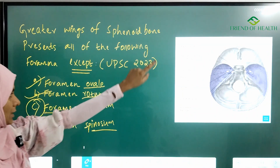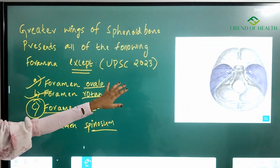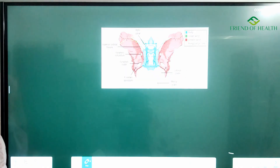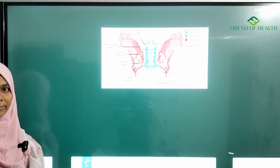To summarize: foramen ovale, foramen rotundum, and foramen spinosum are all part of the greater wing of sphenoid bone, while foramen lacerum is not. That's all about this question. Thank you all.